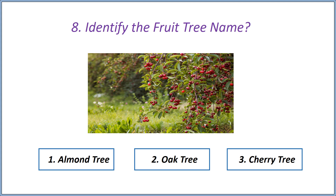Eighth question: identify the fruit tree name. Options — first option: almond tree, second option: oak tree, third option: cherry tree. Answer is cherry tree.